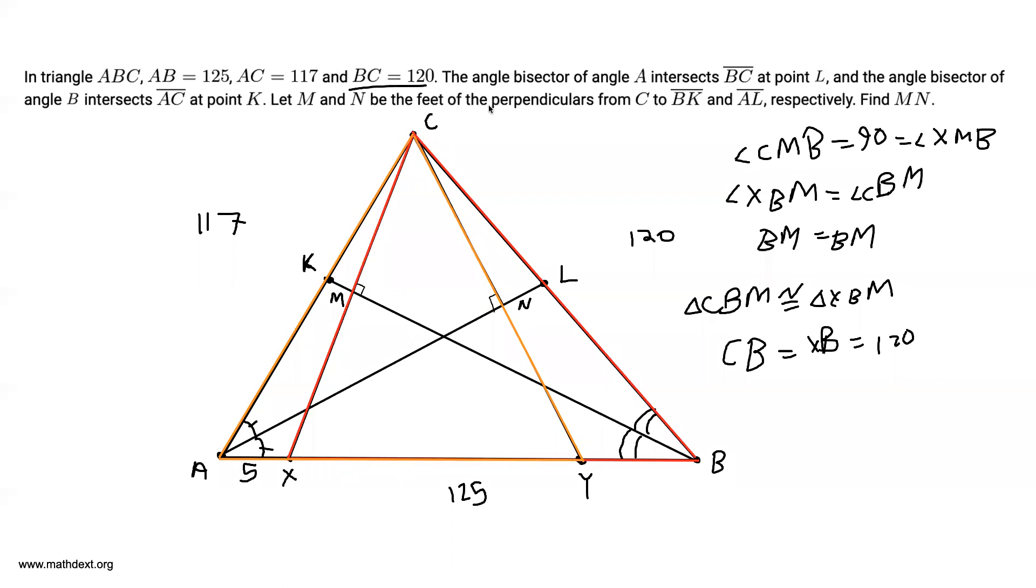And therefore AY is equal to AC, which is 117. And therefore BY is equal to 8 because AY plus BY is 125.